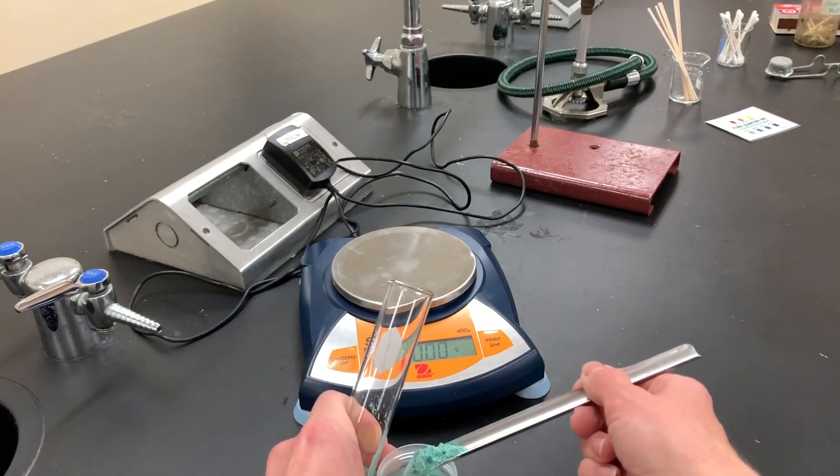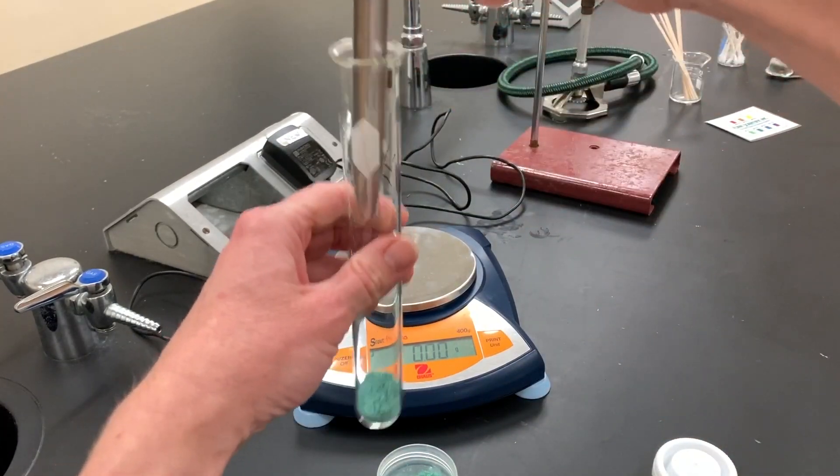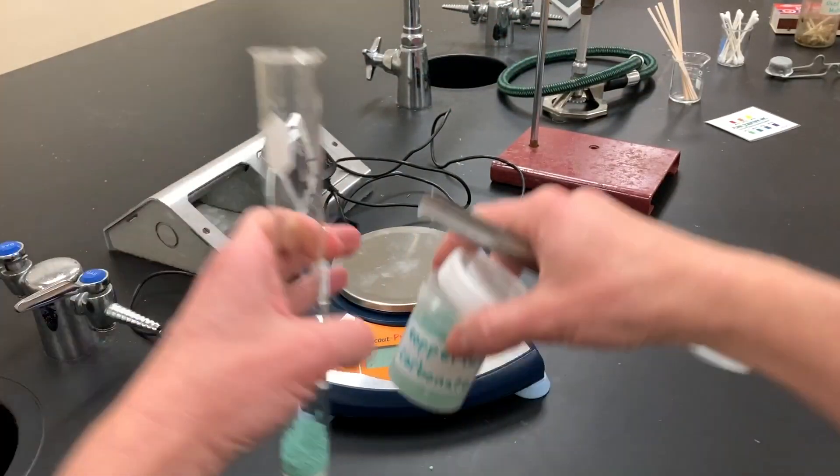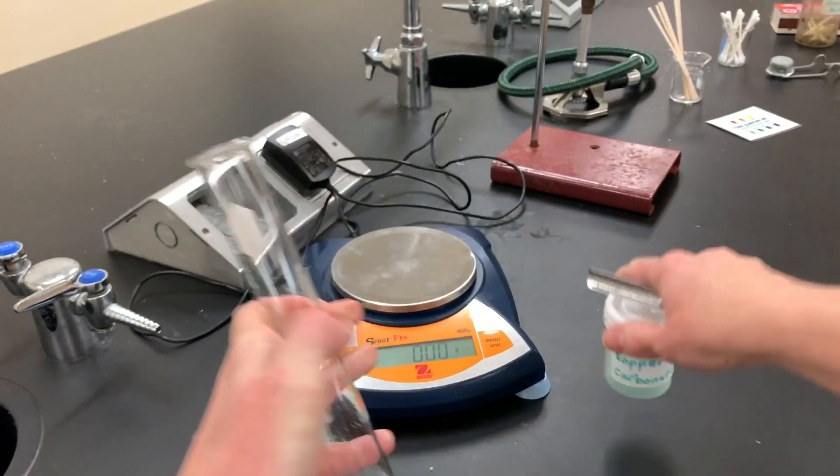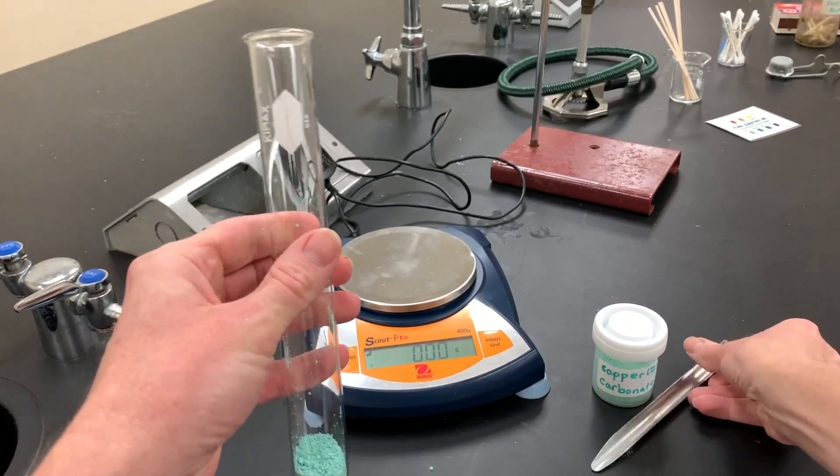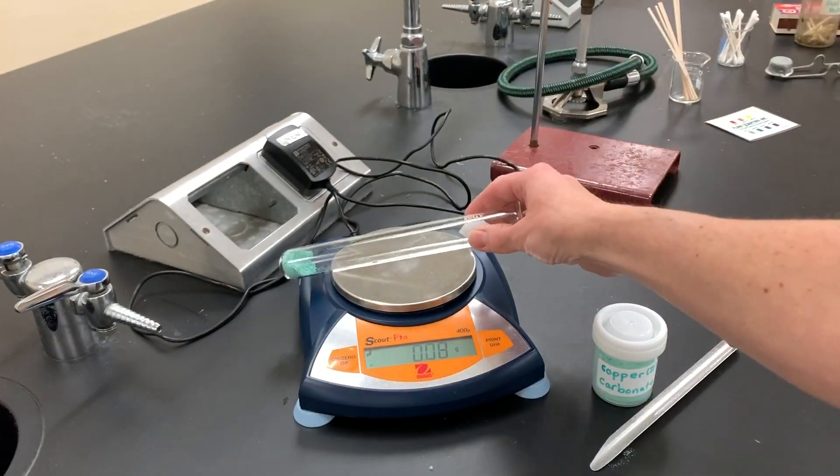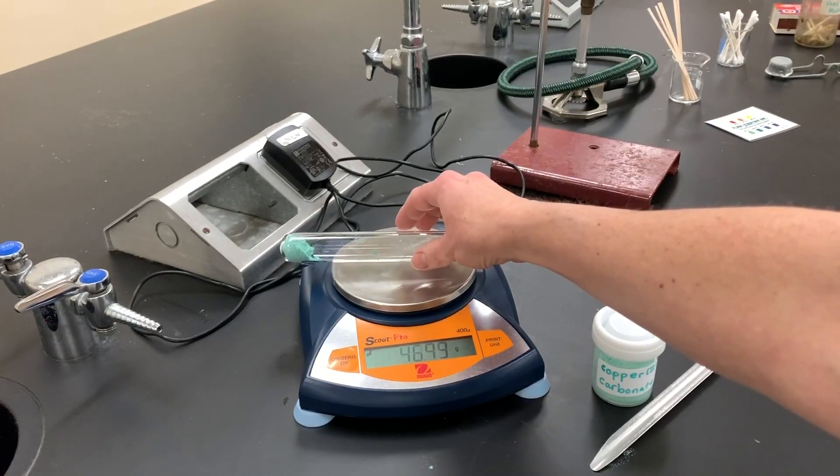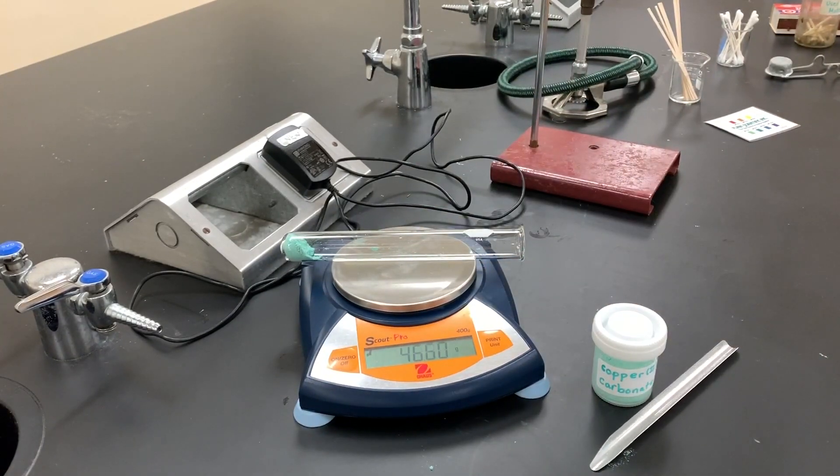As long as we have the original mass and we don't have too much in there to heat, we'll be fine. That looks pretty good for the experiment. Carefully place this on the balance again. Use the same exact electronic balance, get it steady, and record that mass: 46.60 grams in your data table.